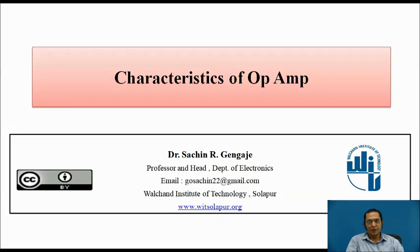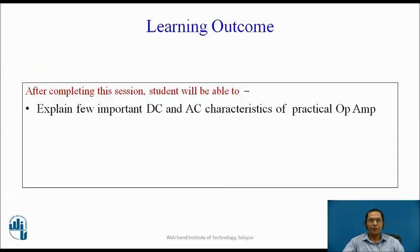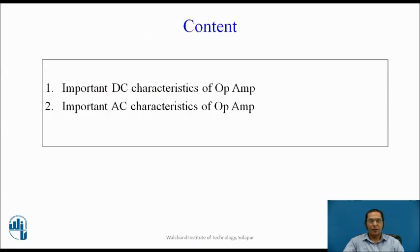Since the last few sessions, we have been discussing about the different characteristics of op-amp. Today will be the last session about the characteristics of op-amp. The learning outcome of this session includes: after this session, the student is able to explain few important DC and AC characteristics of practical op-amp. The content includes important DC characteristics of op-amp and important AC characteristics of op-amp.